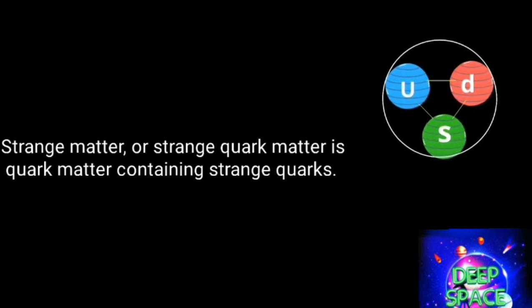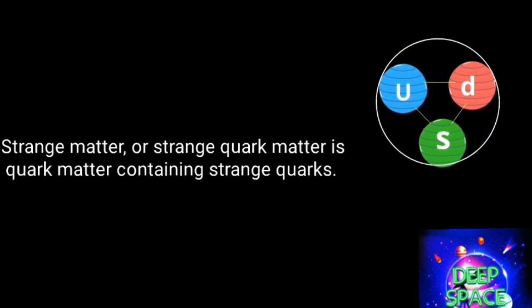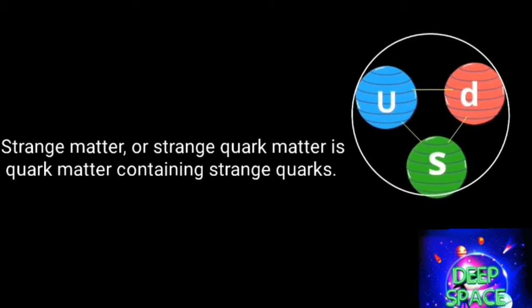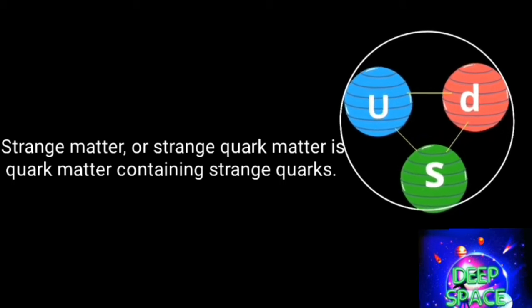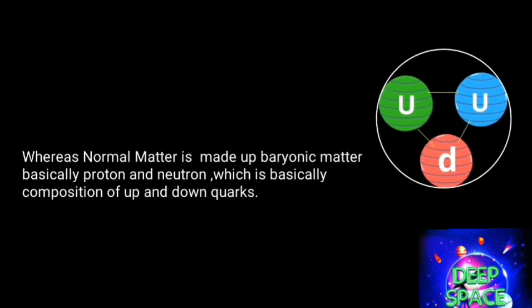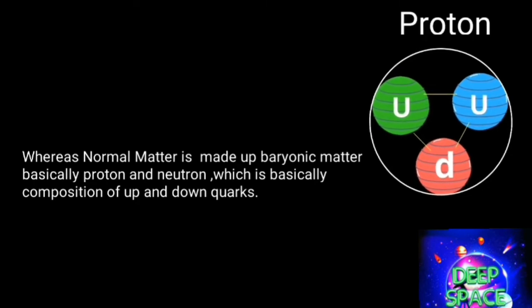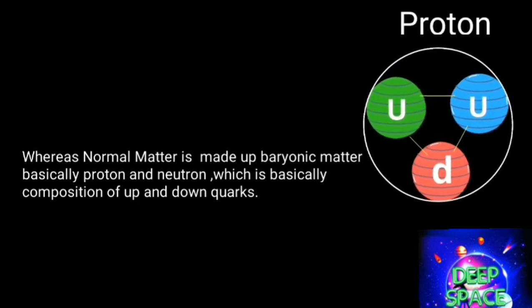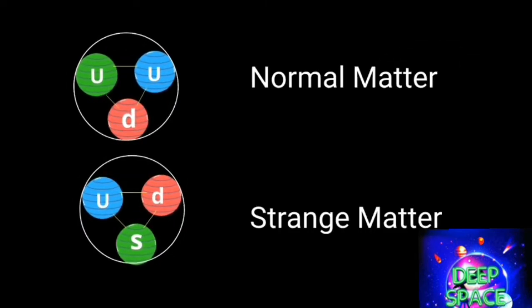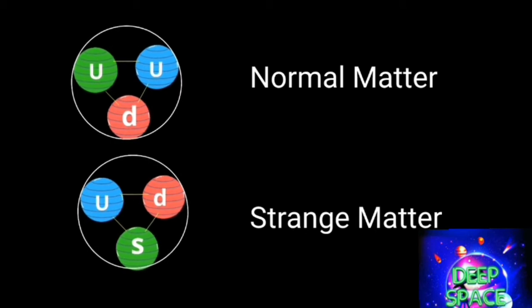Strange matter, or strange quark matter, is hypothetical quark matter containing strange quarks. If you don't know about quarks, you can see my matter versus antimatter video. Whereas normal matter like protons and neutrons only contains up and down quarks, ordinary matter contains atomic nuclei of neutrons and protons, whereas quark matter is a condensed form of matter composed entirely of quarks.